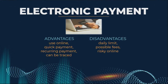You can also set up a recurring payment, so something like the electric bill can be paid every month automatically without you having to worry about it. It can be traced because we're using a credit or debit card. Disadvantages: you may still have a daily limit, there could still be fees depending on where you're using it, and since it's online, that can be risky.